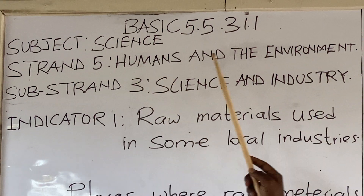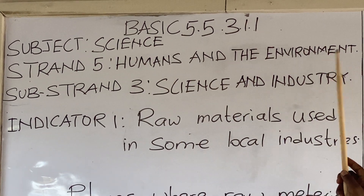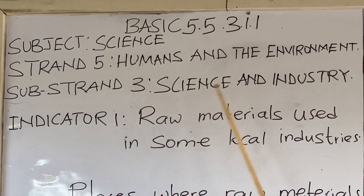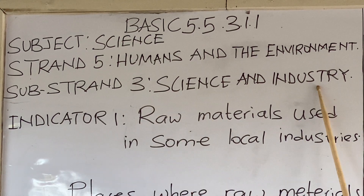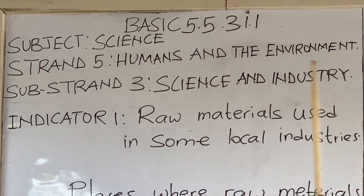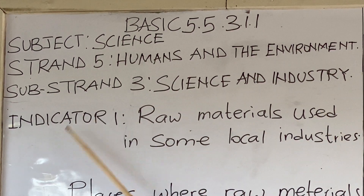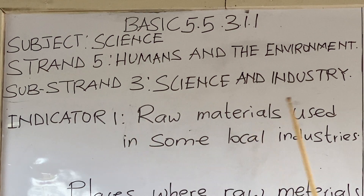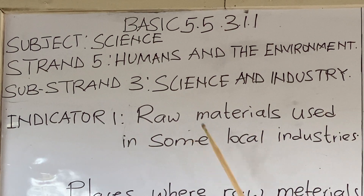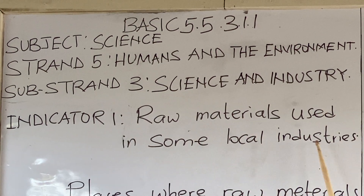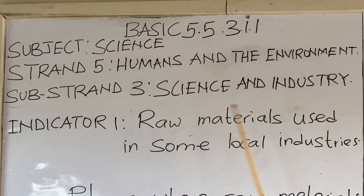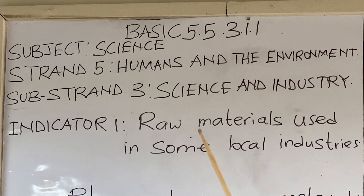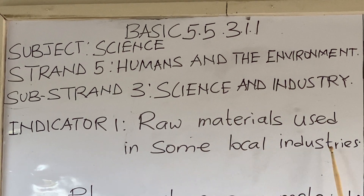Humans and the Environment, Strand 3, Science and Industry. Indicator 1: raw materials used in some local industries.